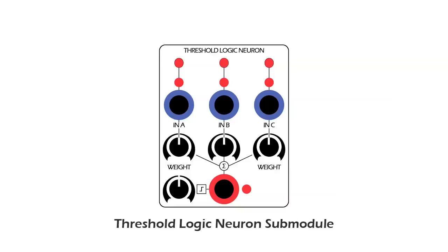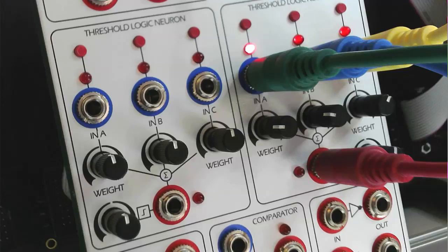Threshold Logic Neuron Submodule. The ANN features two identical Threshold Logic Neuron Submodules based on the design of the McCulloch-Pitts Nervous System Model of the 1940s.